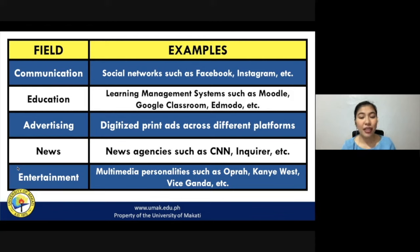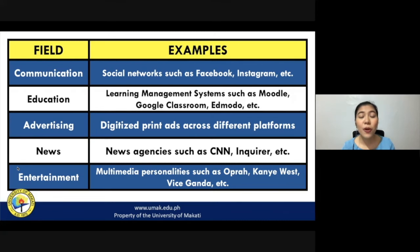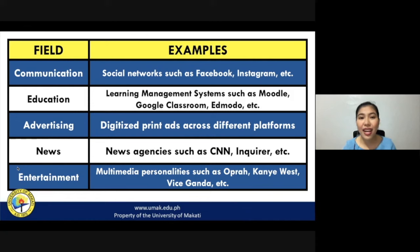In the field of entertainment, multimedia personalities such as Oprah, Kanye West, and locally, Vice Ganda, could be considered people who have maximized the potential of media convergence. These personalities have not stuck with just one platform to reach their audience but have channeled their talents into different activities. Oprah is not just a television host but also a television producer and book author. Kanye West is not just a rapper but also a music producer and fashion designer. Vice Ganda performs on TV as a comedian but is also an entrepreneur, singer, and movie producer.